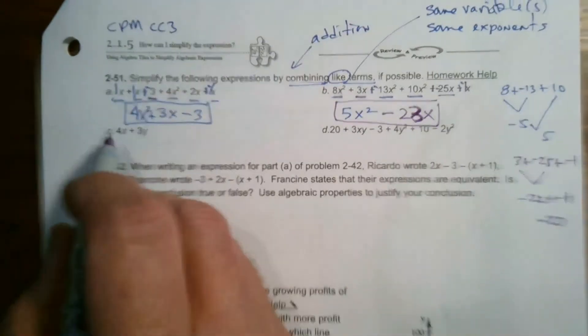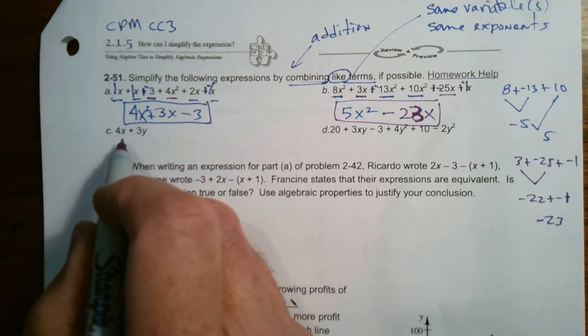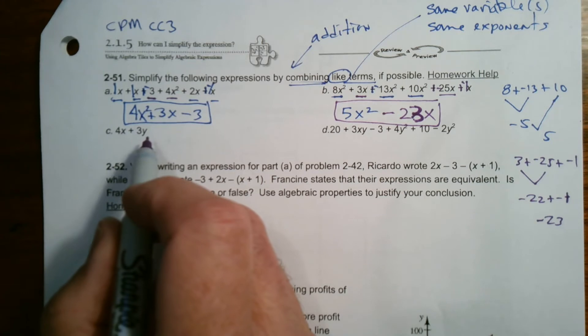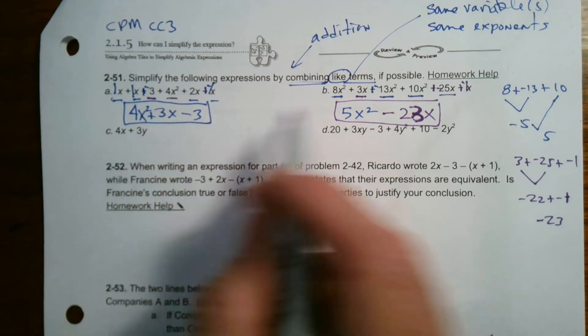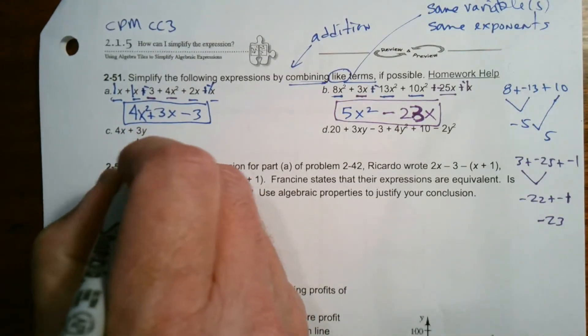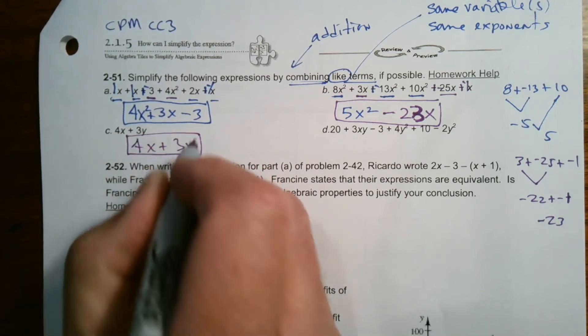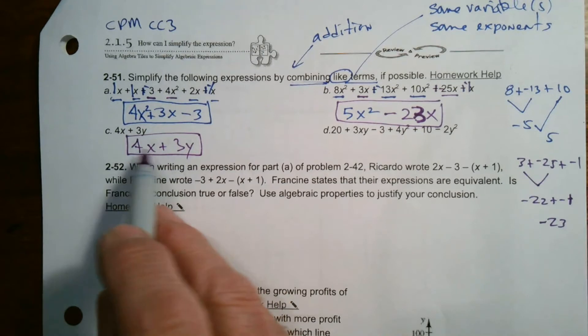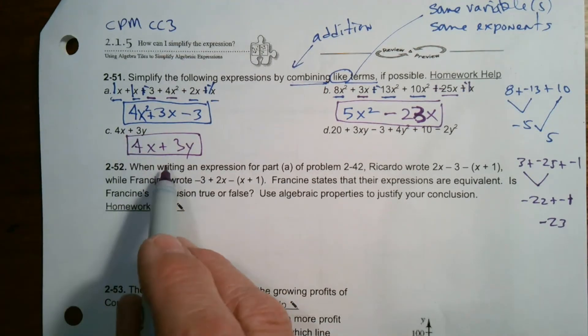If I look at C, I have a four X plus three Y. Well, I have an X term and a Y term and nothing else, but those cannot be combined. An X term and a Y term, they're not the same. They don't have the same variables. They have different variables. So four X plus three Y is the most simplified expression. I can't simplify it any further. So that's the answer itself.